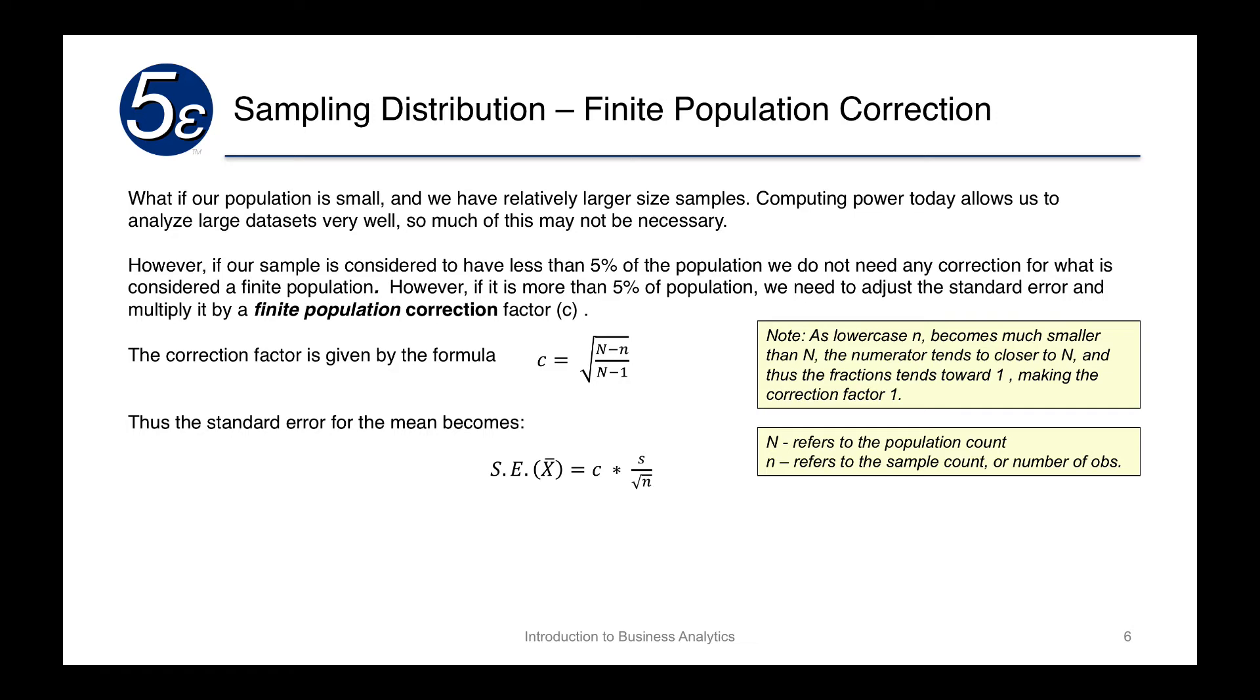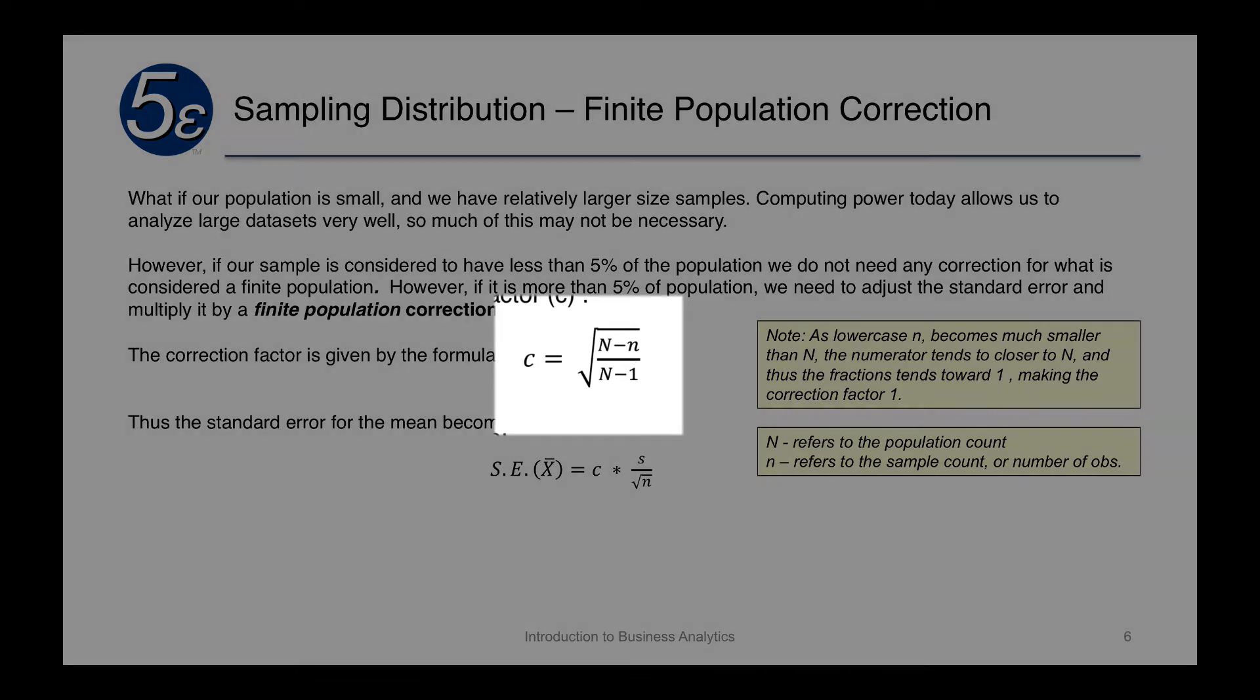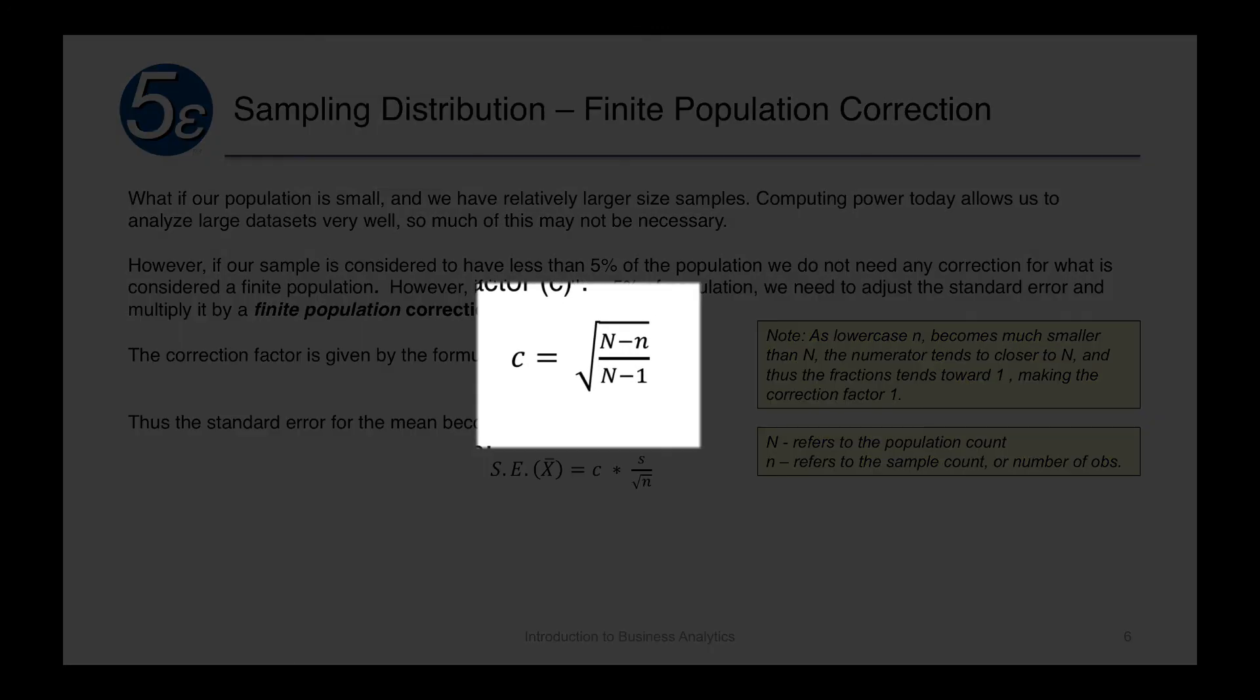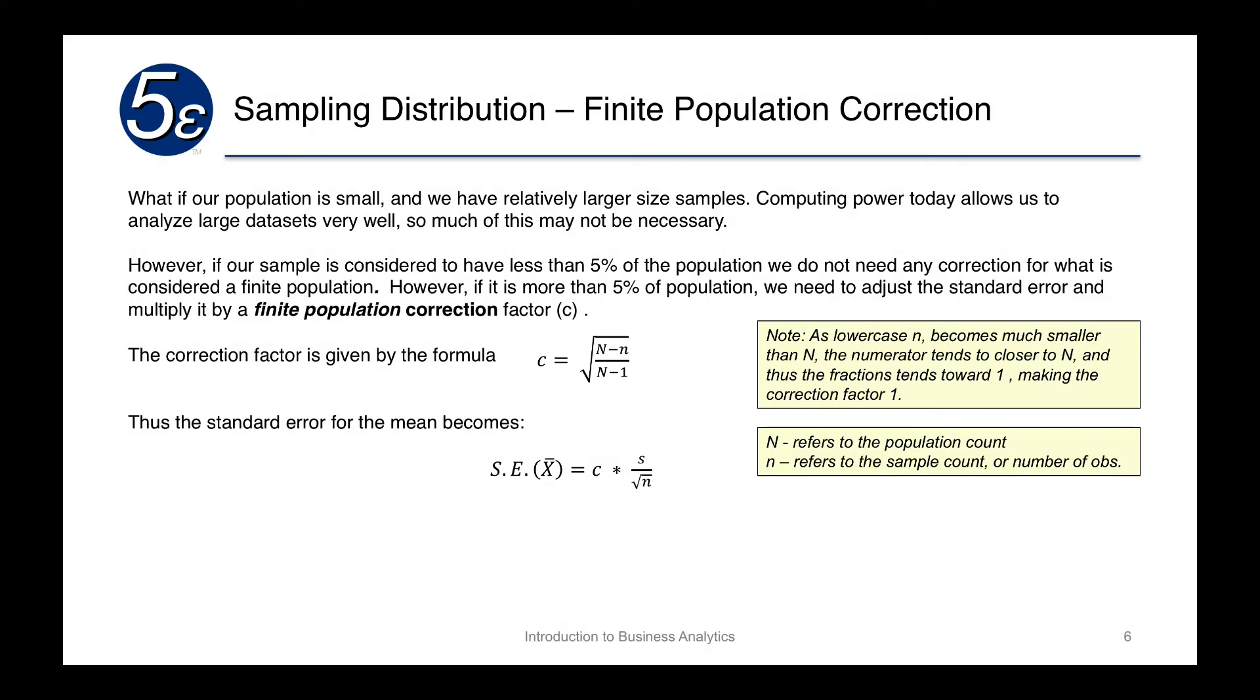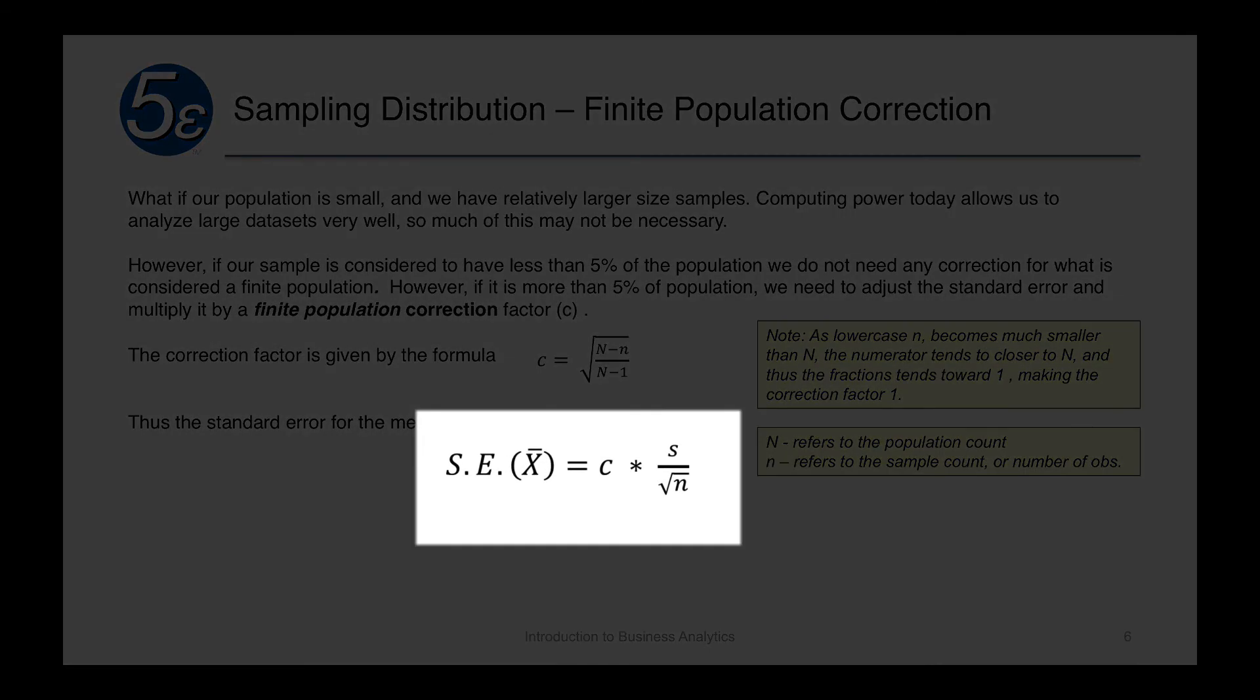The correction factor is equal to the square root of the entire population, which is capital N, minus lowercase n, which is the number of observations in our sample, divided by capital N, again, the total number, minus 1. And that fraction, we take the square root of. So therefore, our standard error is multiplied by this constant C, which is just a slight correction factor.